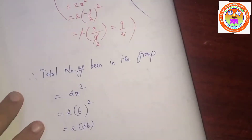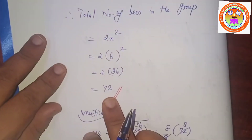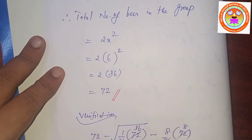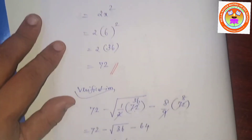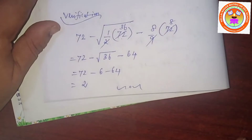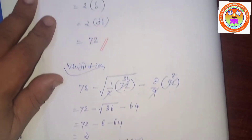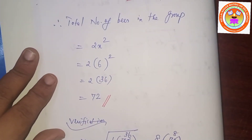Total number of bees in the group equals 72. Problem number 6 is completed. I will be teaching the next problem in the next video. Thank you, children.